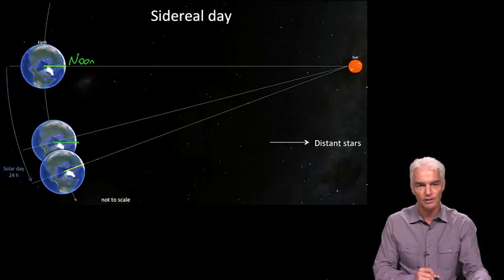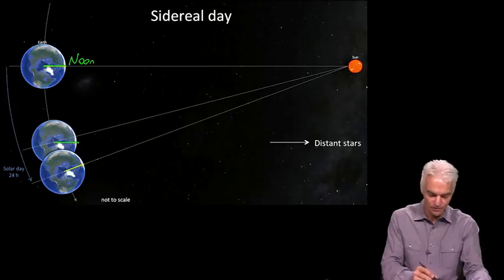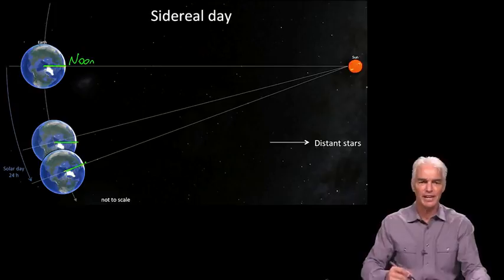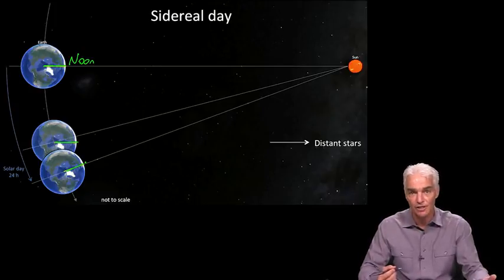You'll have to rotate a little bit more, now the Sun's directly overhead, and that is 24 hours. That's the definition of 24 hours.